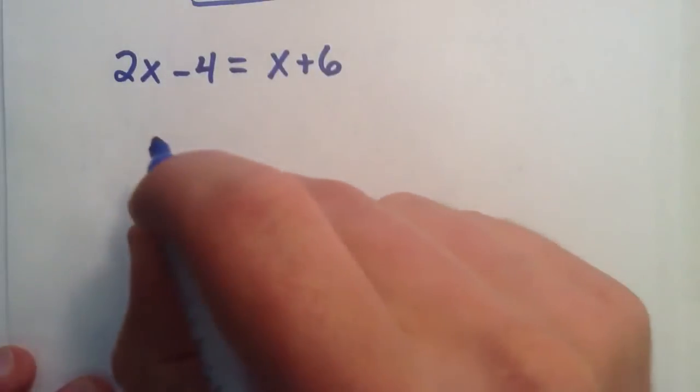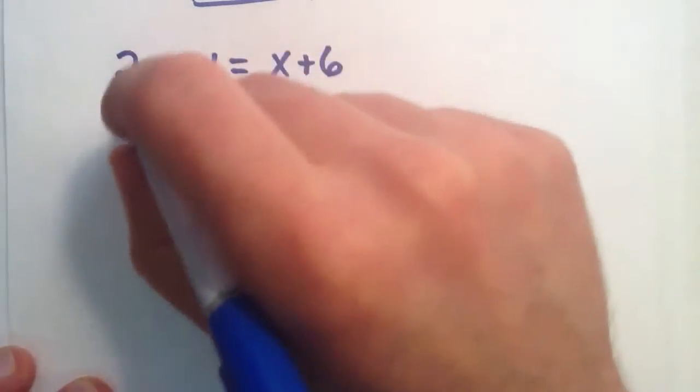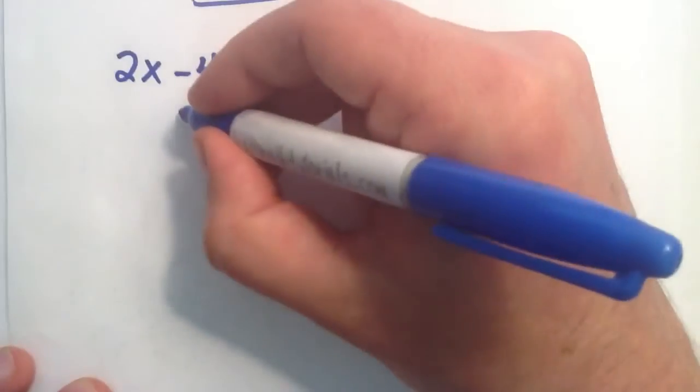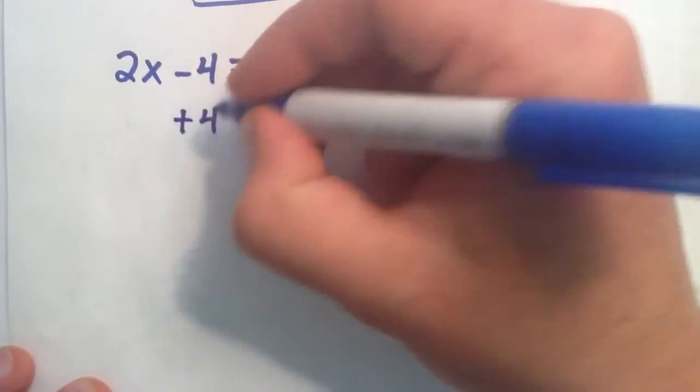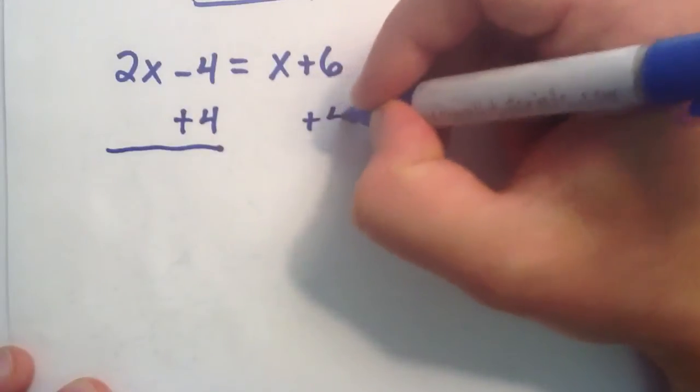So, now our goal is we want to have x equals some number. So, let's just get the x's on this side. So, in order to do that, we're going to add a 4 here. And if we add a 4 on one side, we have to add a 4 on the other side.